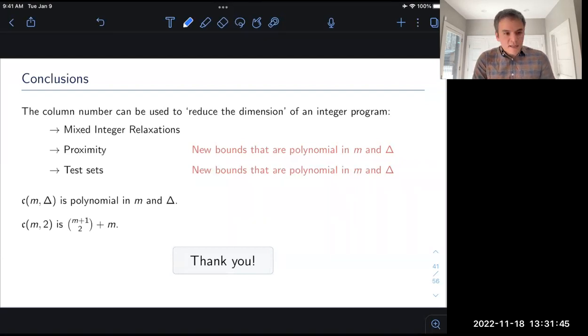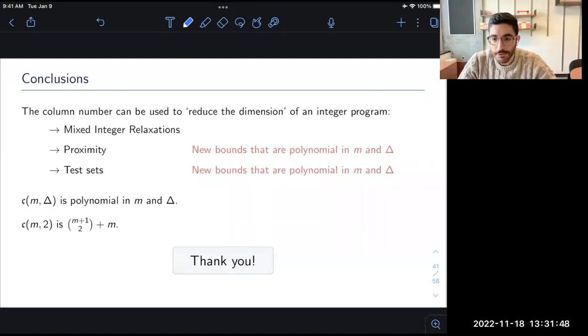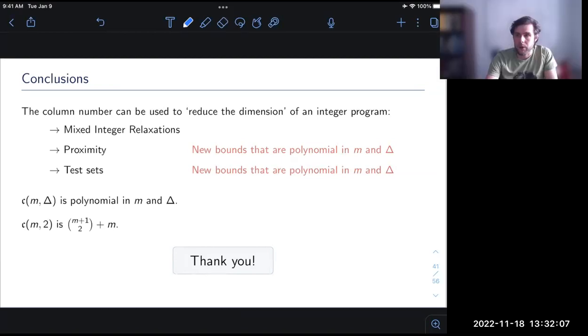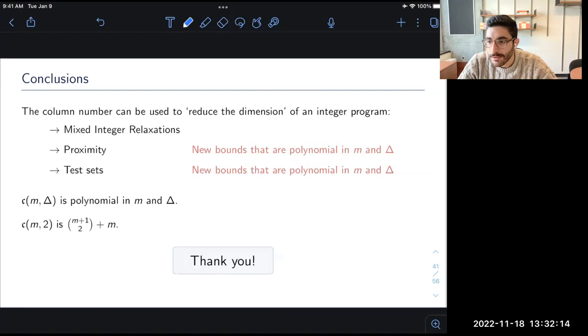Just as a conclusion, this column number is a very simple structural property of the delta modular matrix, but it ties into well studied properties like proximity and test sets that have connections to the algorithmic side. We derived the first bounds polynomial in the rank and delta, and we hope this work can help us better understand the overall structure of these matrices. Thank you all. Thank you very much Joe. If you have a question please raise your hand or type it in the chat.